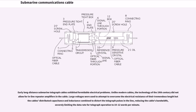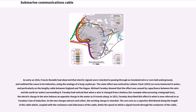Early long-distance submarine telegraph cables exhibited formidable electrical problems. Unlike modern cables, the technology of the 19th century did not allow for inline repeater amplifiers in the cable. Large voltages were used to attempt to overcome the electrical resistance of their tremendous length, but cables' distributed capacitance and inductance combined to distort the telegraph pulses in the line, reducing the cable's bandwidth, severely limiting the data rate for telegraph operation to 10 to 12 words per minute. As early as 1816, Francis Ronalds had observed that electric signals were retarded in passing through an insulated wire underground, and outlined the cause to be induction, using the analogy of the long Leiden jar.